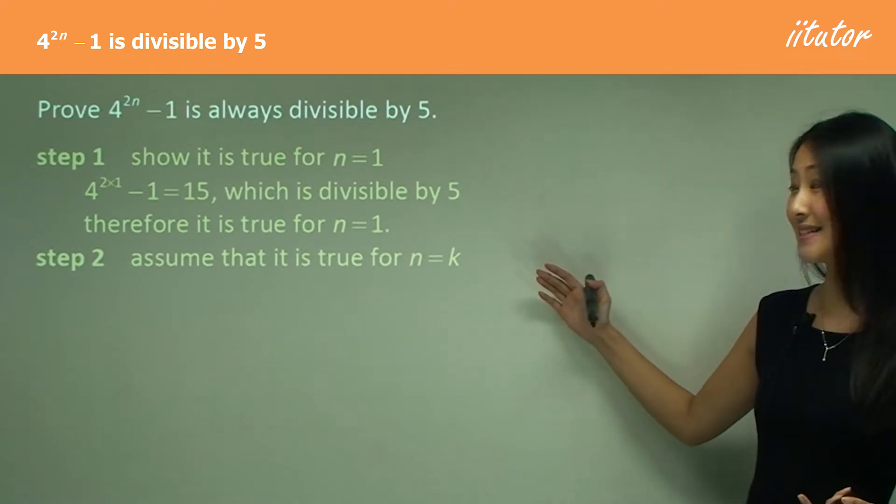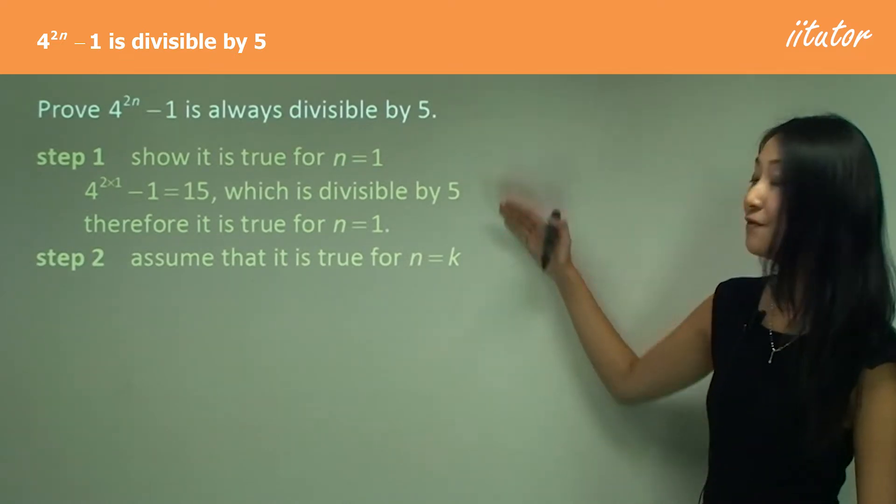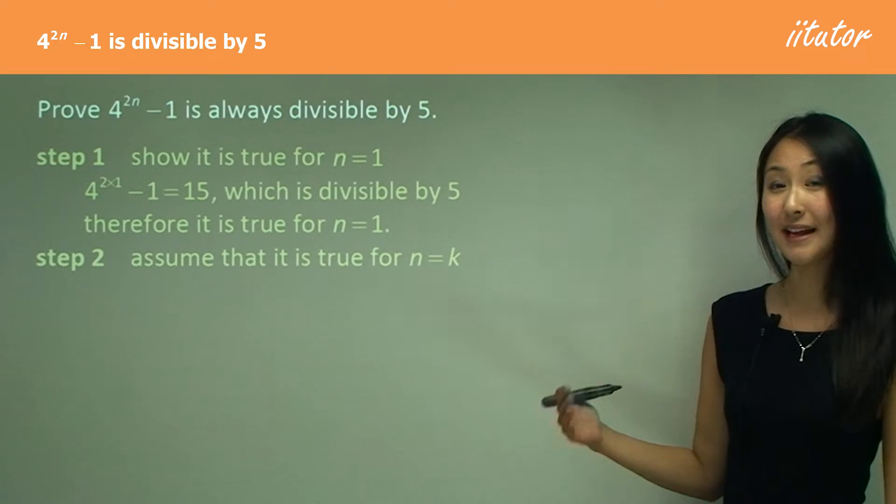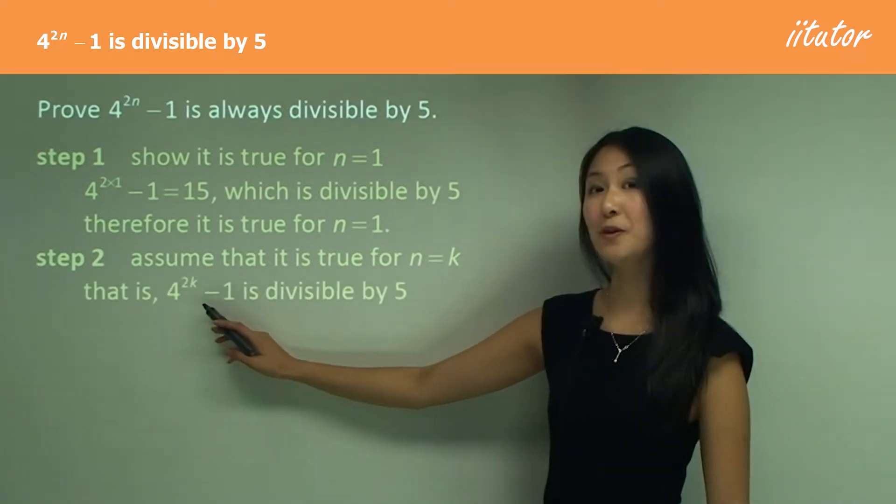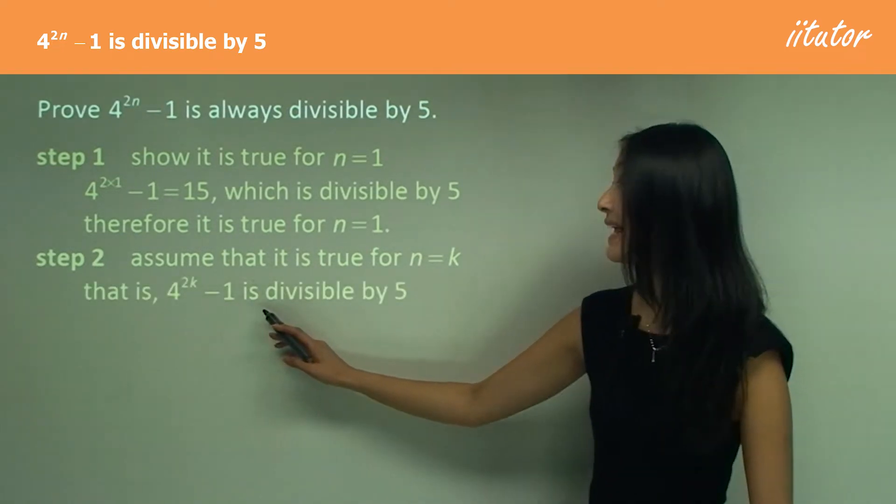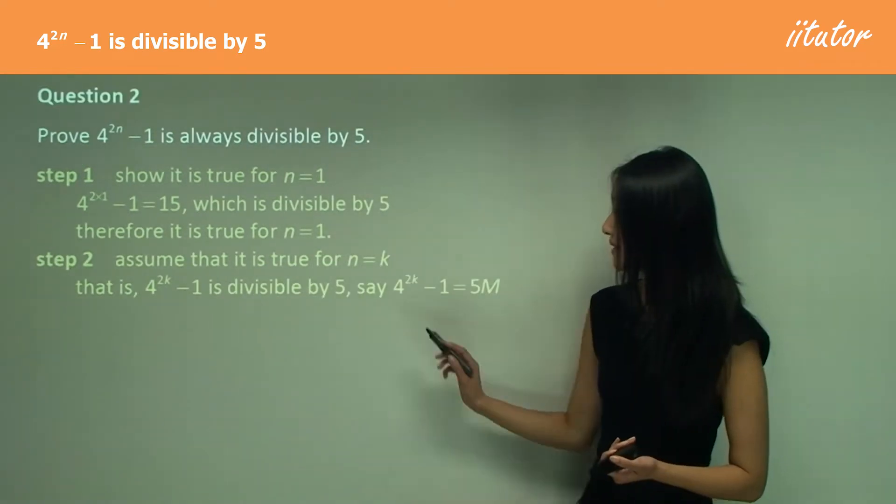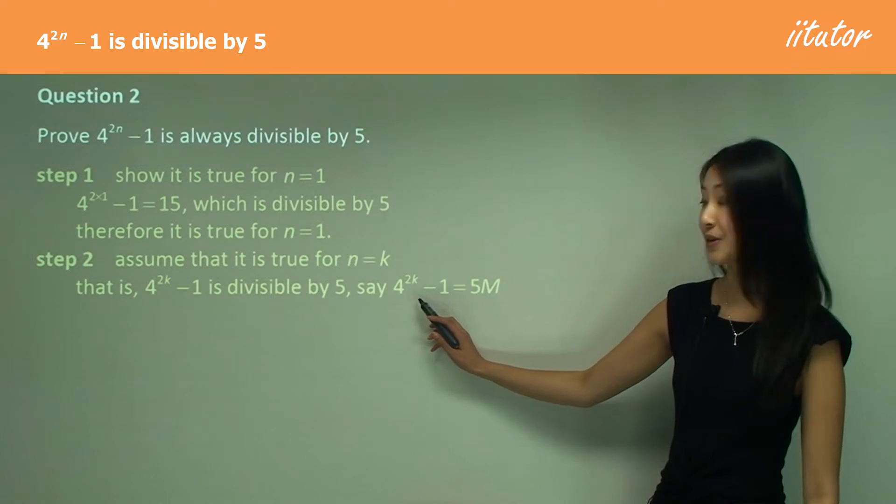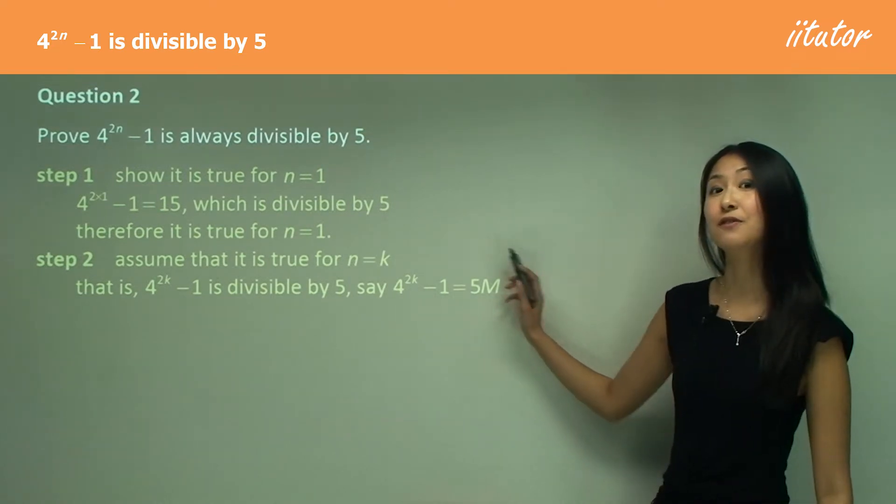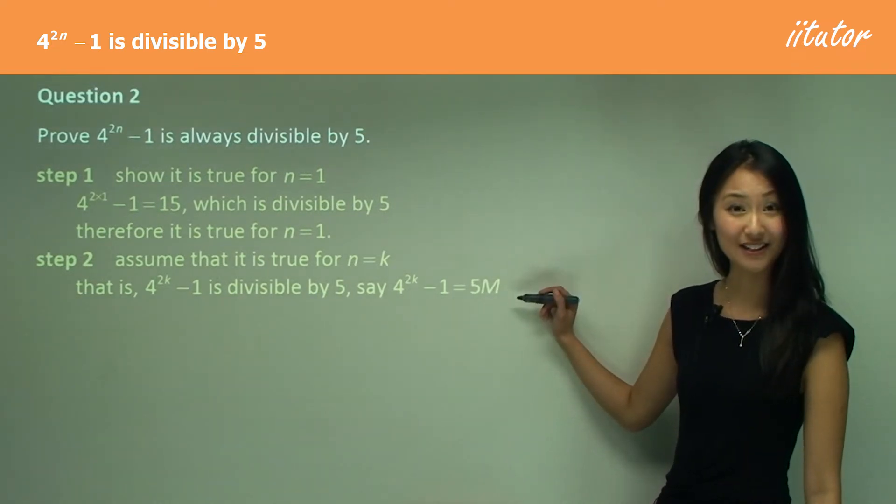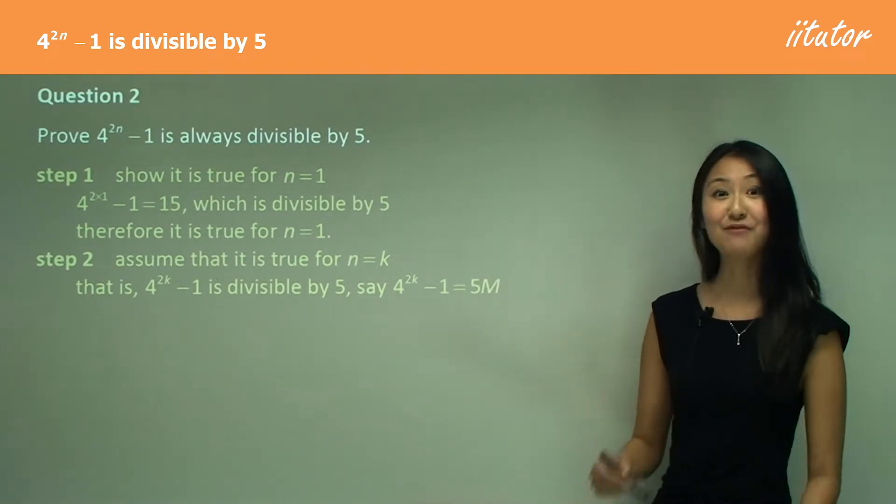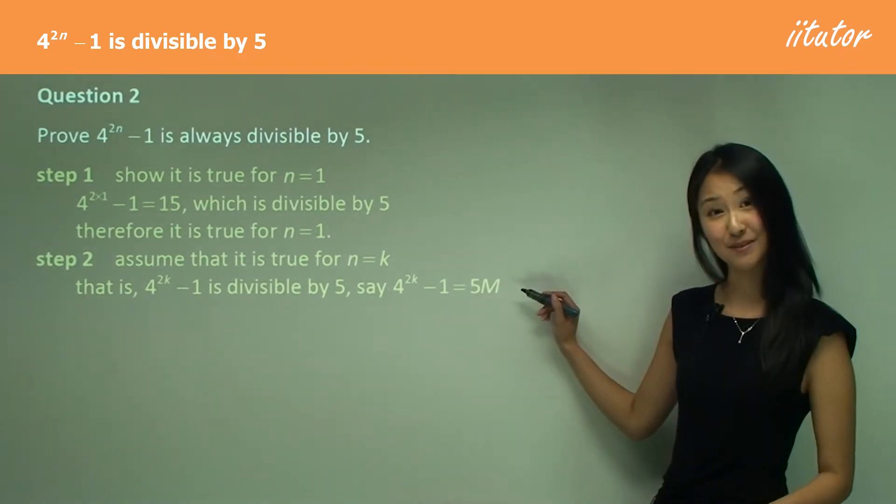In step 2, I make the assumption that this is true for n equals k. So remember, that's when we write that 4 to the power of 2k minus 1 is divisible by 5. And now we change that into an equation. So we say that 4 to the power of 2k minus 1 equals 5m, where m is an integer, because by multiplying by 5 we're guaranteeing it can be divisible by 5.